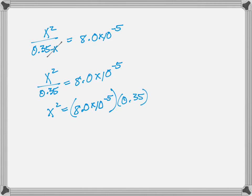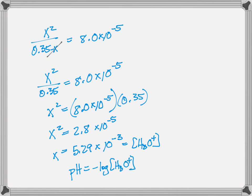By simplifying our values and isolating x squared on one side of the equation and then taking the square root, we get a value of x equal to 5 times 10 to the minus 3, which is equal to our hydronium ion concentration. We can use that to find the pH of the solution, which is 2.28.